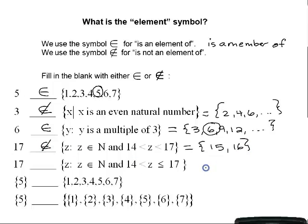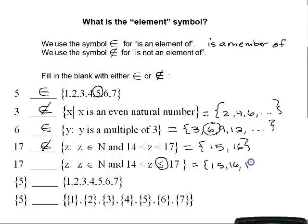The next question is: is 17 an element of the set of all x such that x is a natural number and x is between 14 and 17, but notice this includes 17. So the natural numbers greater than 14 and less than or equal to 17 are 15, 16, and 17. Therefore, 17 is an element of this set.